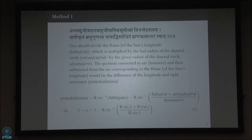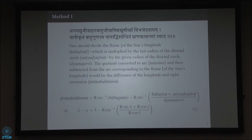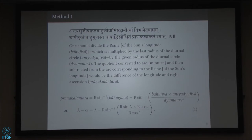This is the first method — a very simple, straightforward method. The formula derived from the verse is that Pranakalantra is the sine inverse of Bahuguna subtracted by the sine inverse of a related quantity. In mathematical notation, lambda minus alpha equals lambda minus R·sin⁻¹ of that quantity. Here we are using R sines, which is the traditional Indian approach.